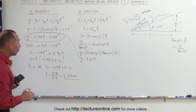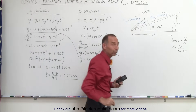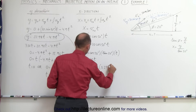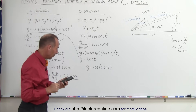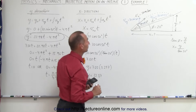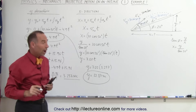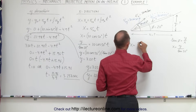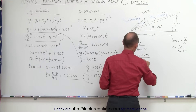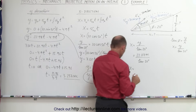Now that we have time, we can solve for y using y equals 7.02 times t, which is 7.02 times 3.257, giving y equals 22.87 meters. Since we have the relationship between y and x, we can solve for x: x equals y divided by tangent of 20 degrees, which is 22.87 divided by tangent of 20 degrees, giving x equals 62.82 meters.